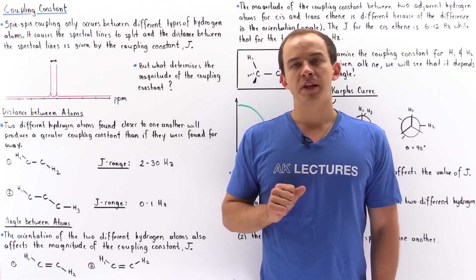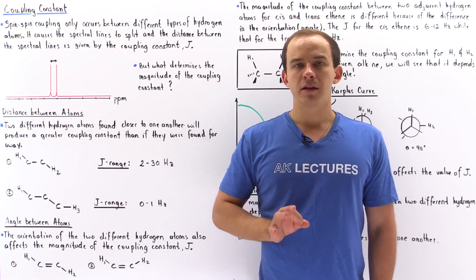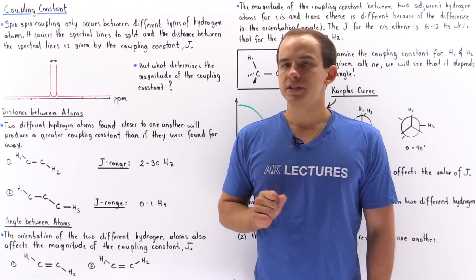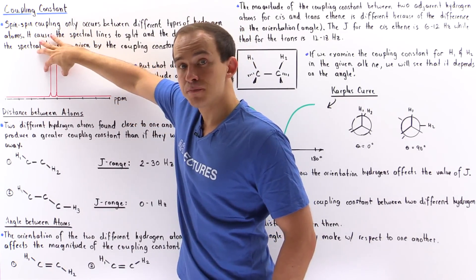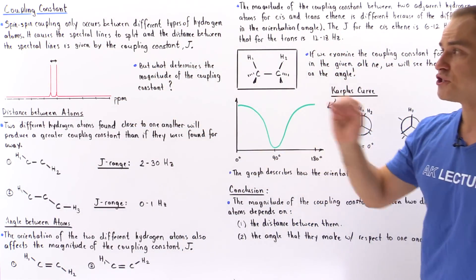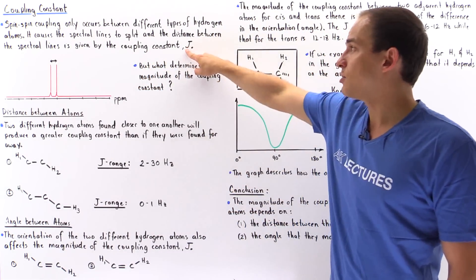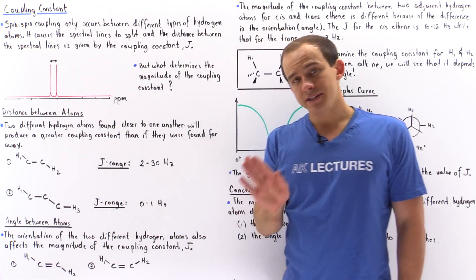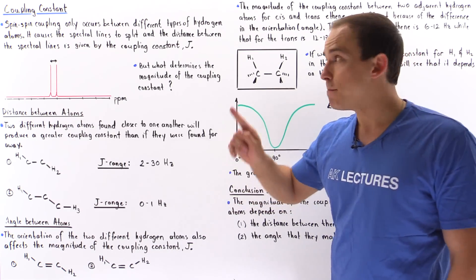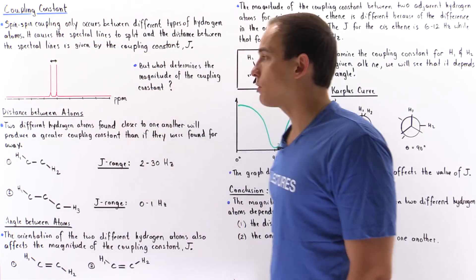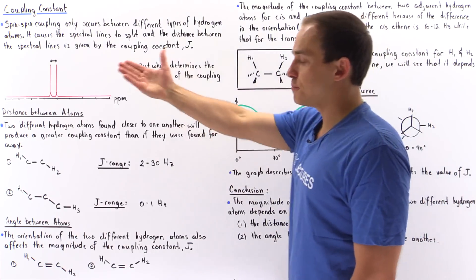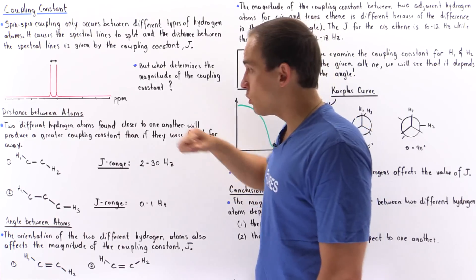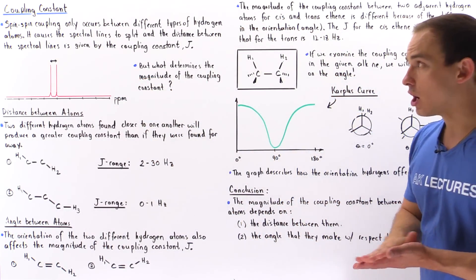Spin-spin coupling is the interaction that takes place between two different H atoms on a given molecule, and it causes the splitting of spectral lines on the proton NMR spectrum. The separation distance between the two split spectral lines resulting from that spin-spin interaction is given by the coupling constant, designated with the uppercase J. In this lecture, we want to explore what exactly determines the magnitude of the coupling constant J.